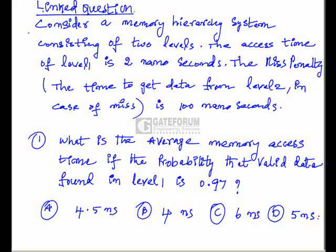Consider a memory hierarchy system consisting of two levels. The access time of level 1 is 2 nanoseconds. The miss penalty, that is the time to get data from level 2 in case of miss, is 100 nanoseconds.